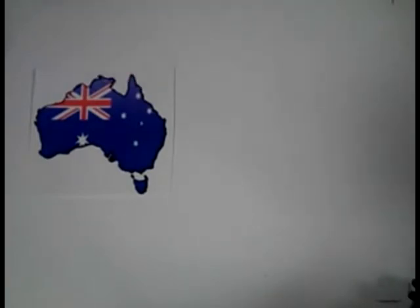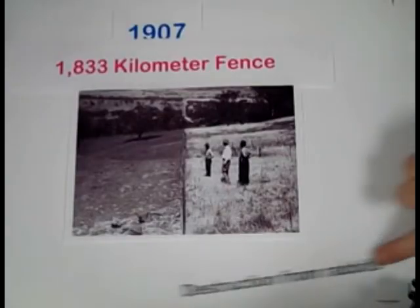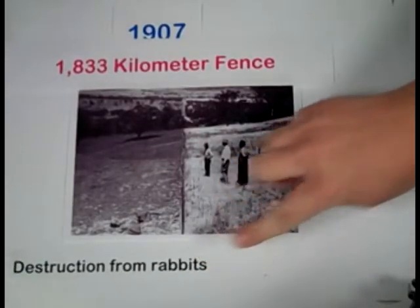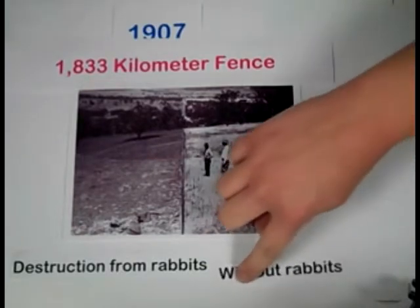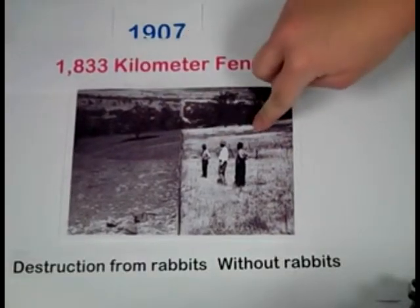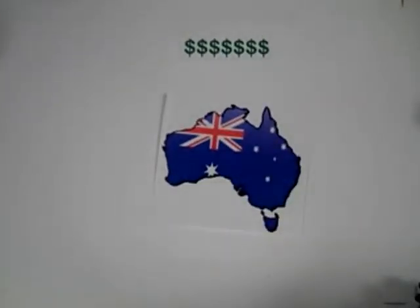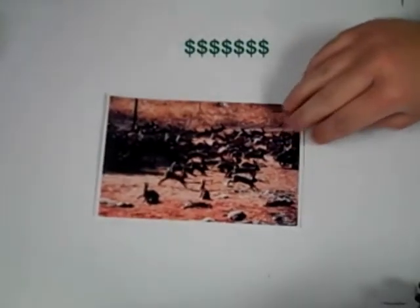The Australian government became aware of this issue and devised a plan to stop the rabbits from spreading. In 1907, the government funded the construction of a 1,833-kilometer-long fence to prevent further rabbit migration. However, the attempt failed due to the fact that by the time the fence was finished, the rabbits had already crossed to the other side. The Australian government was at a loss — they had just spent a large sum of money producing an anti-rabbit fence that had failed to fix their problem, and they were desperate for a solution.